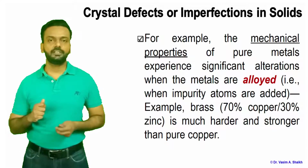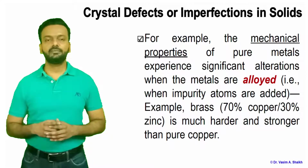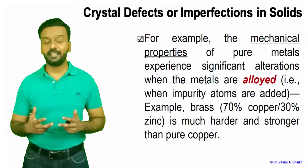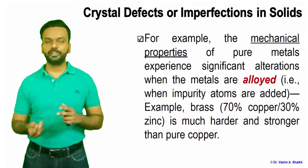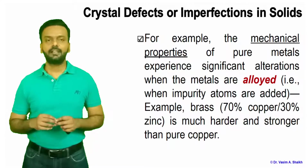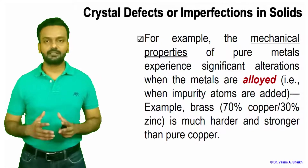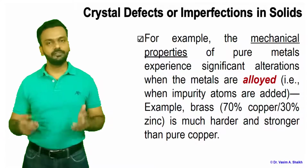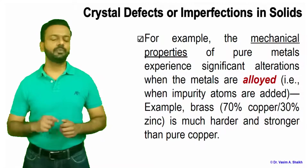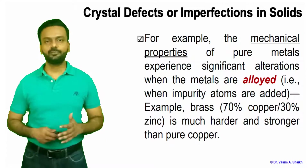When we alloy a material and put some impurity atoms in it specifically to get certain properties, that is called alloying. As an example, brass is basically 70% copper and 30% zinc, and the properties of brass are much better in terms of hardness and strength compared to pure copper. So we are adding zinc — an impurity atom — into pure copper and getting enhanced hardness and strength. Alloying is adding impurity atoms to modify the mechanical properties of the material.